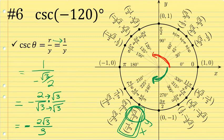Unlike the previous problem, this does not simplify any further. The simplest form of the cosecant of negative 120 degrees is negative 2√3 over 3.